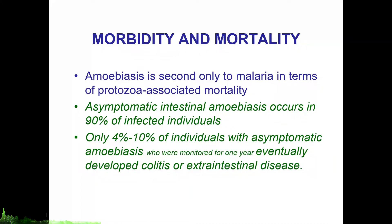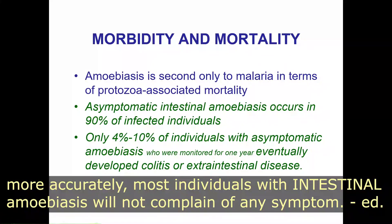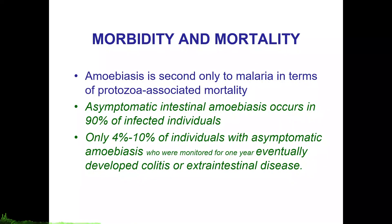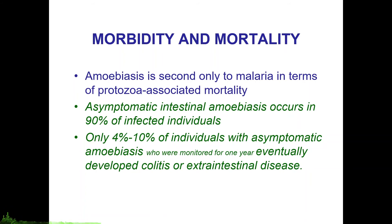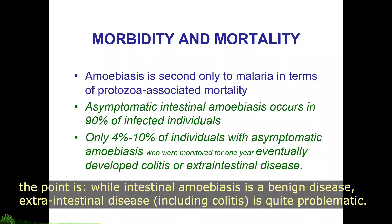In terms of morbidity and mortality, amoebiasis is second only to malaria in protozoa-associated mortality. However, asymptomatic intestinal amoebiasis occurs in 90% of infected individuals. Only 4-10% of those with asymptomatic amoebiasis would eventually develop colitis or other complications such as extra-intestinal disease within one year of monitoring. Amoebiasis is also fourth in morbidity, with combined prevalence of amoebic colitis and amoebic liver abscess estimated at around 40-50 million cases annually worldwide, resulting in tens of thousands of deaths.